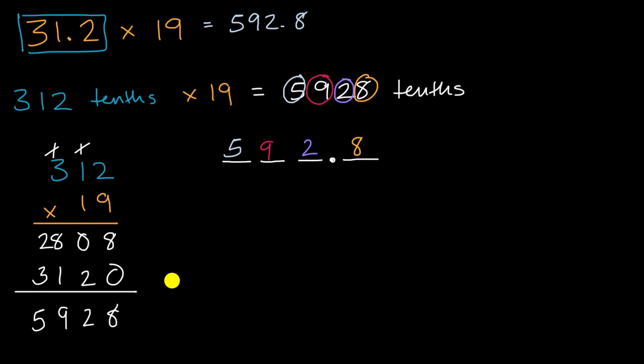Now, another way to approach this is to just think about the digits, not the actual numbers, to figure out the answer will have what digits in it, and then try to estimate to think about where the decimal place should go. So for example, you could do 312 times 19. So essentially, remove the decimal, do the computation...